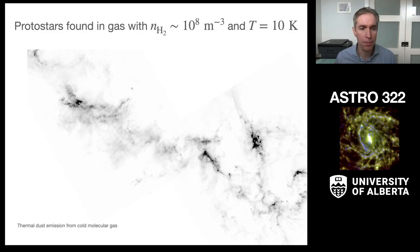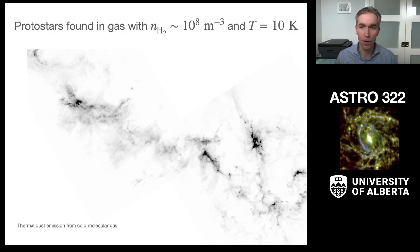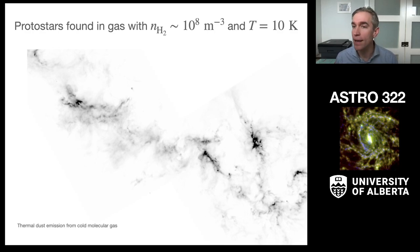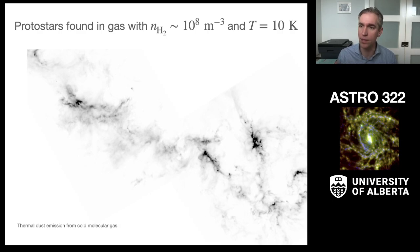This molecular cloud is the stellar nursery for star formation. From decades of work, we've concluded that we typically find the youngest stars in gas with a volume density of hydrogen molecules of about 10^8 per cubic meter, and a gas temperature of 10 Kelvin — nearly 10 degrees above absolute zero. This is some of the coldest, darkest conditions in the universe, and that's where stars are forming.